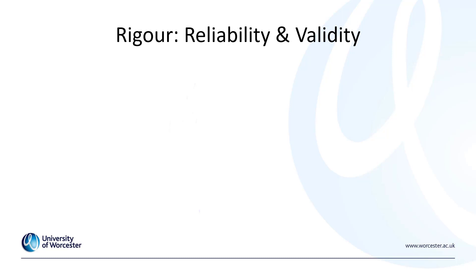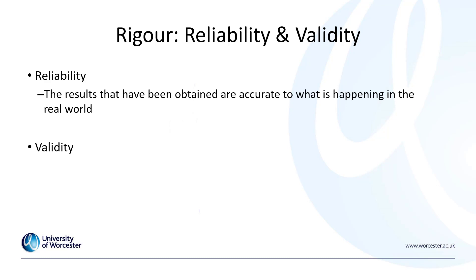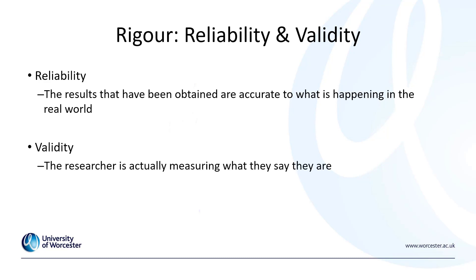When we are concerned with rigour in quantitative research, most researchers are interested in the reliability and the validity of the data. Reliability is concerned that the results obtained are accurate to what is happening in the real world. Validity is concerned with whether the researcher is actually measuring what they say they are measuring.